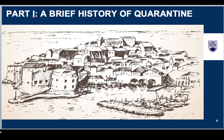If sickness was detected aboard vessels, goods would not be offloaded and crews were sent to island lazaretos, or isolation hospitals, where they were quarantined until they recovered or died. It was not uncommon for infected ships to be turned away from ports of call. In the 16th century Mediterranean, quarantine was intended to strike a balance between health and trade, but this was not the case everywhere.